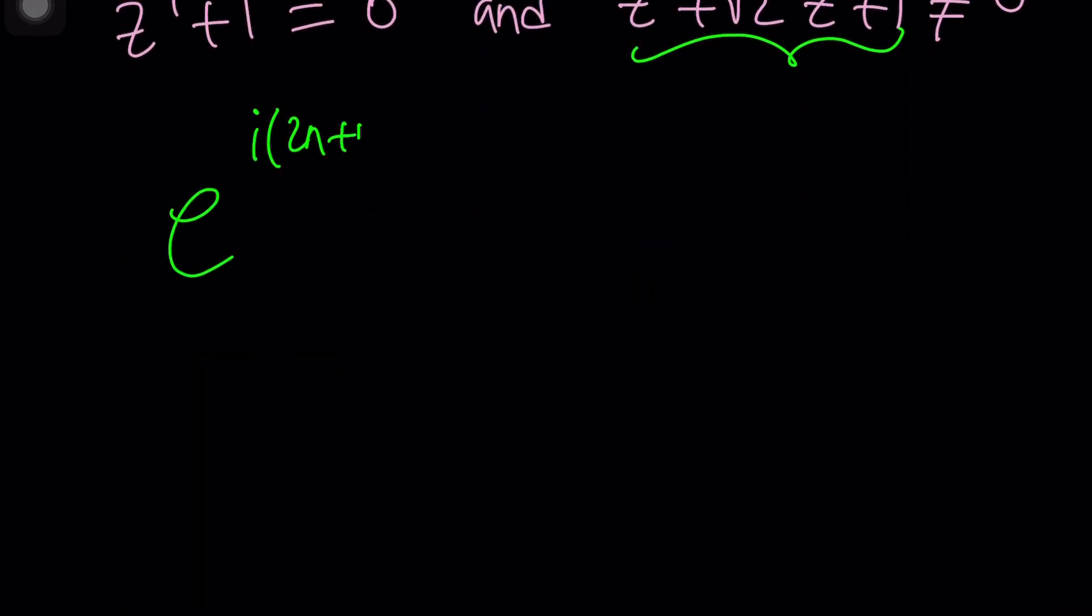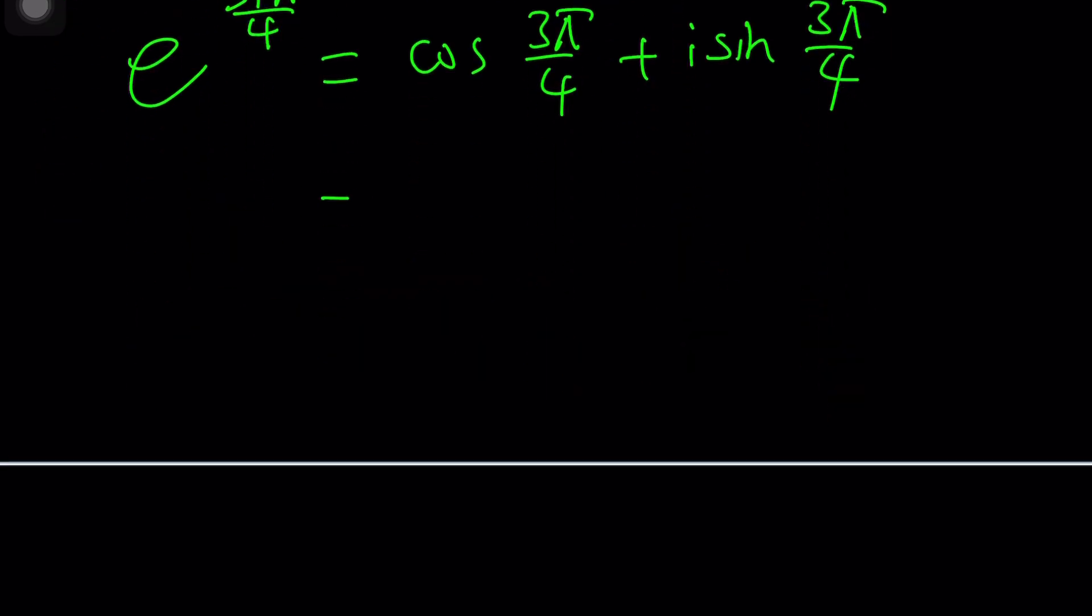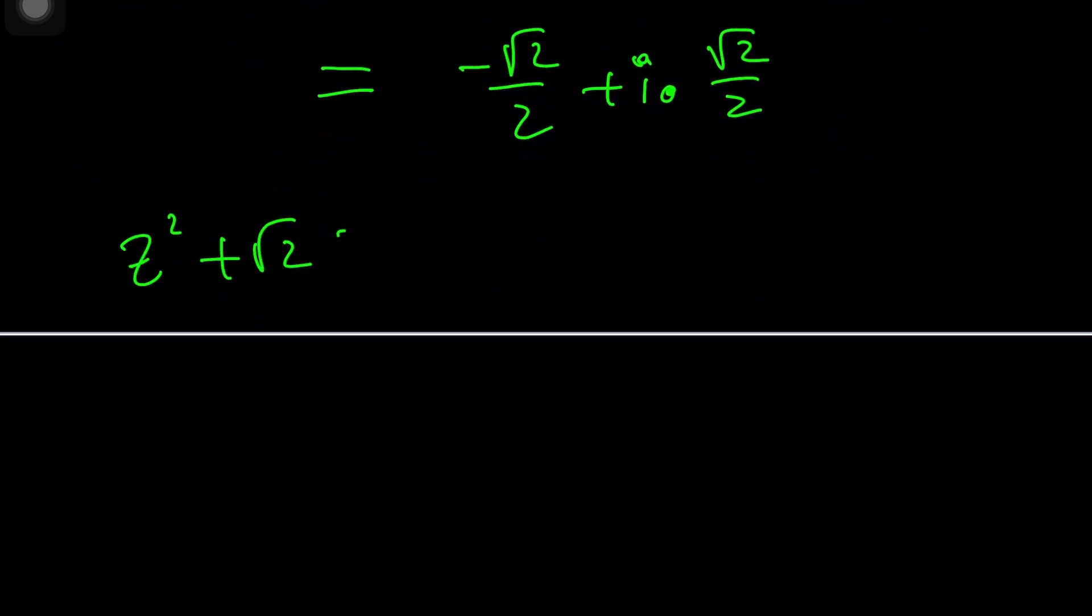So let me rewrite it. e to the power i times (2n+1)π over 4, this is z, and now if I replace n with n equals 1, I want to get 3π over 4. That's going to give me e to 3iπ over 4. This means that the argument is 3π over 4. That's going to be cosine 3π over 4 plus i sine 3π over 4. You probably know these values. Cosine is negative in the second quadrant, and that's going to be negative √2 over 2, and this will be i times √2 over 2. Now, do you think this is going to make the second equation 0? Something that we need to test.